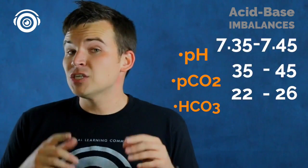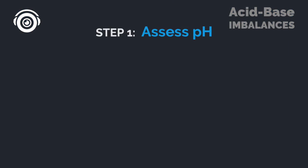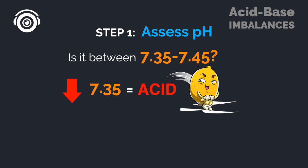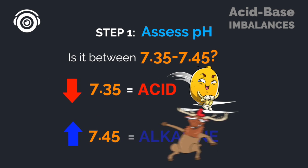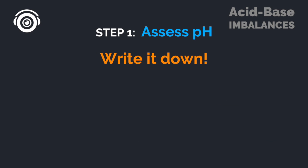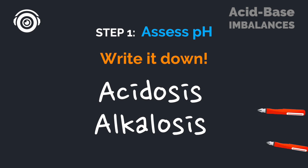Now let's talk about an actual acid-base problem. Look at the pH and ask: is it within 7.35 to 7.45? If the lab value is below 7.35, that's an acid — write down acidosis. If the number is above 7.45, that's alkaline — write down alkalosis. You already have 50% of the problem solved right there.